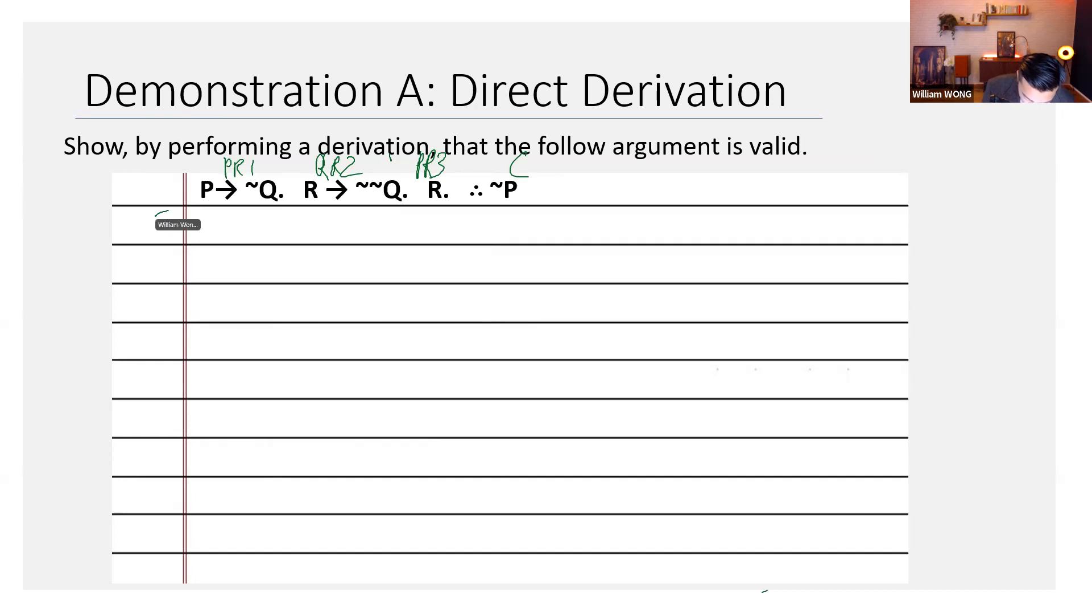So, the first step to any derivation is writing the first show line. You write one. Then you write show. And then you write down your conclusion, which in this case is not P.